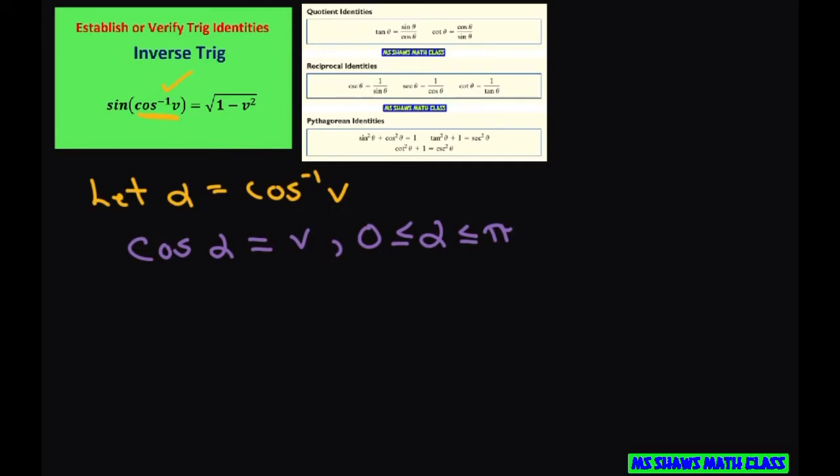So now let's write our equation, our expression, and substitute. We know that inverse cosine of v is alpha. So we're going to do sine of alpha.